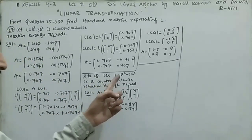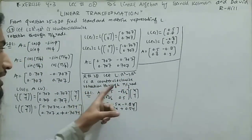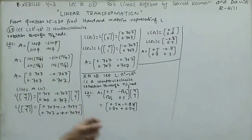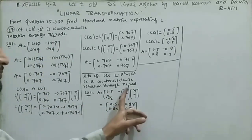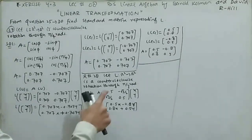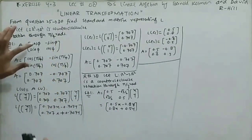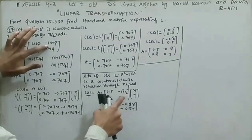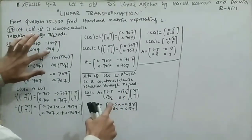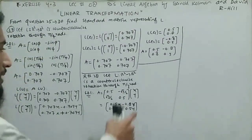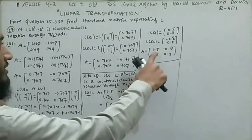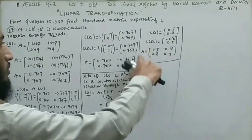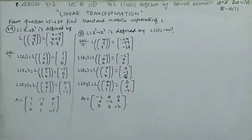Question 28: L is a counterclockwise rotation through π/3 radians. Using the same rotation matrix with θ = π/3 (60°): cos(60°) = 0.5, sin(60°) = √3/2 ≈ 0.866. The standard matrix is A = [0.5, -0.866; 0.866, 0.5].